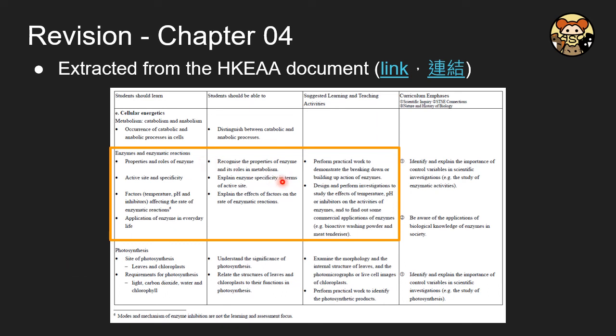Here are the extracts from the HKEA document. You are required to understand how the property of enzymes will be, so it includes protein nature and also specific in actions and how enzyme specificity in terms of the active site. You should also understand that this will lead to the explanation of how different factors, including temperature, pH, and inhibitors, interact with enzymes. So here is the end of this video. I hope to see you next time. Bye!